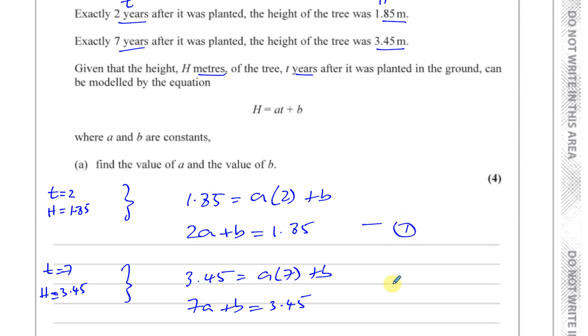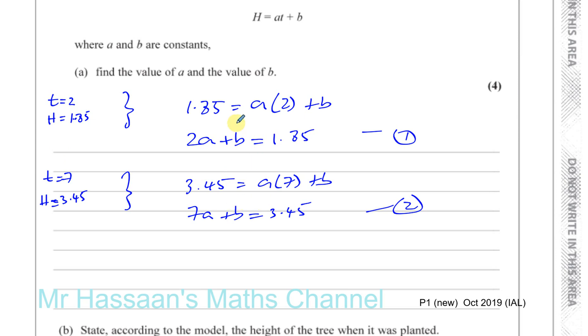We can solve this pair of simultaneous equations by subtracting them to eliminate b. I'll do equation 2 minus equation 1 to keep the a term positive. This gives 7a minus 2a, which is 5a. B minus b disappears, and we have 3.45 minus 1.85, just to make sure in case we make a silly mistake.